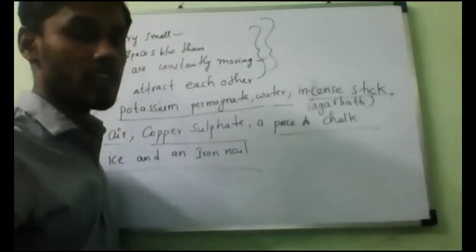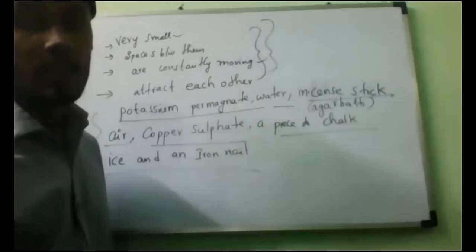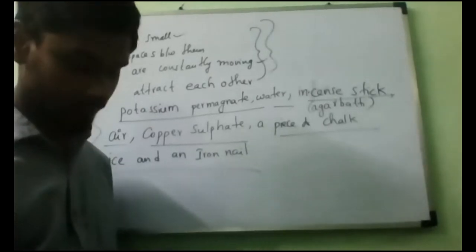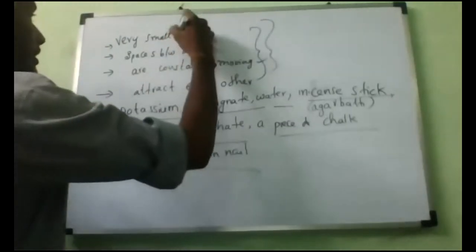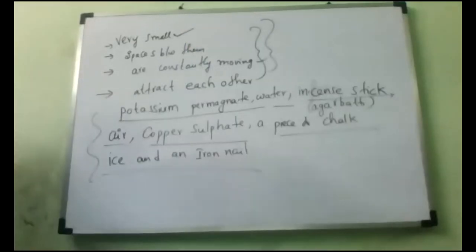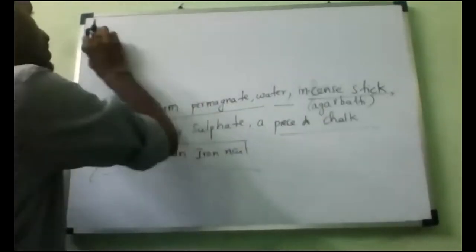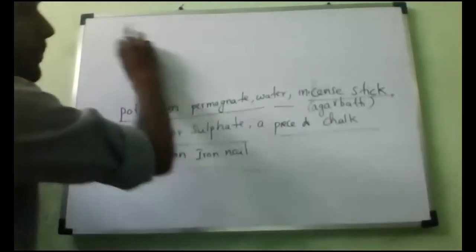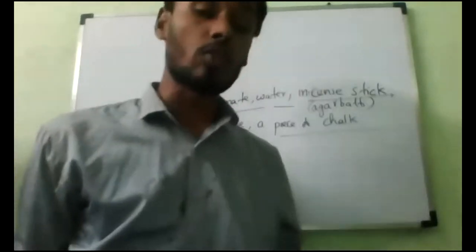Let us come to the first characteristic. The first characteristic is that the particles of matter are very, very small. So now let us see how we can prove that. The particles of matter are made up of very, very small particles, so now we have to prove that.